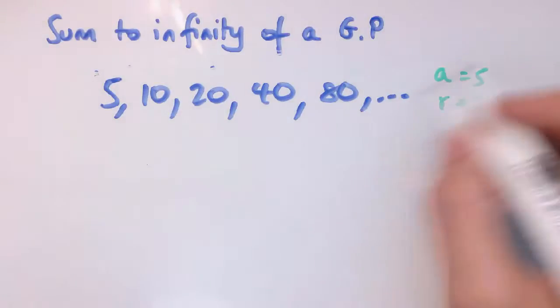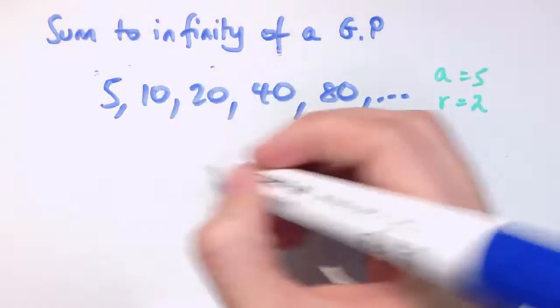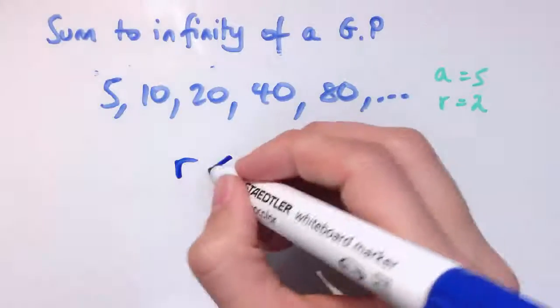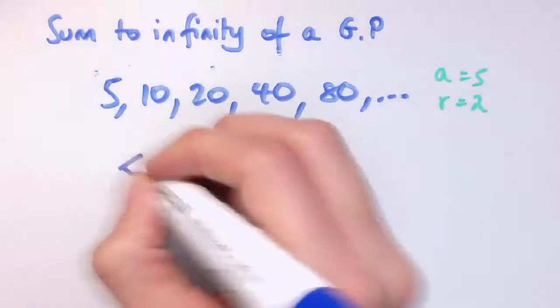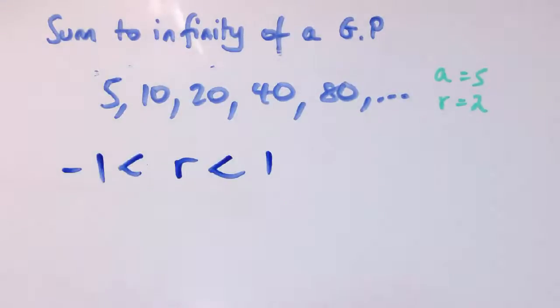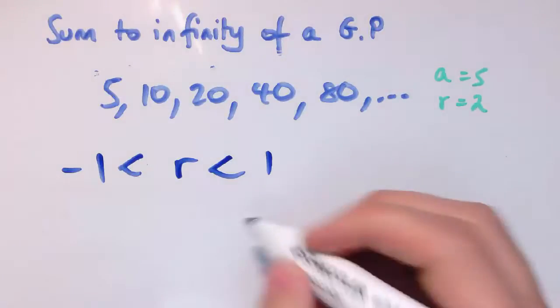So, a geometric progression only has an infinite sum when r, the common ratio, is between 1 and minus 1, not including 1 and minus 1. The one we had before was a half, that one did have a sum, that's between minus 1 and 1. The reason is that means the size of the terms in the sequence gets smaller and smaller.